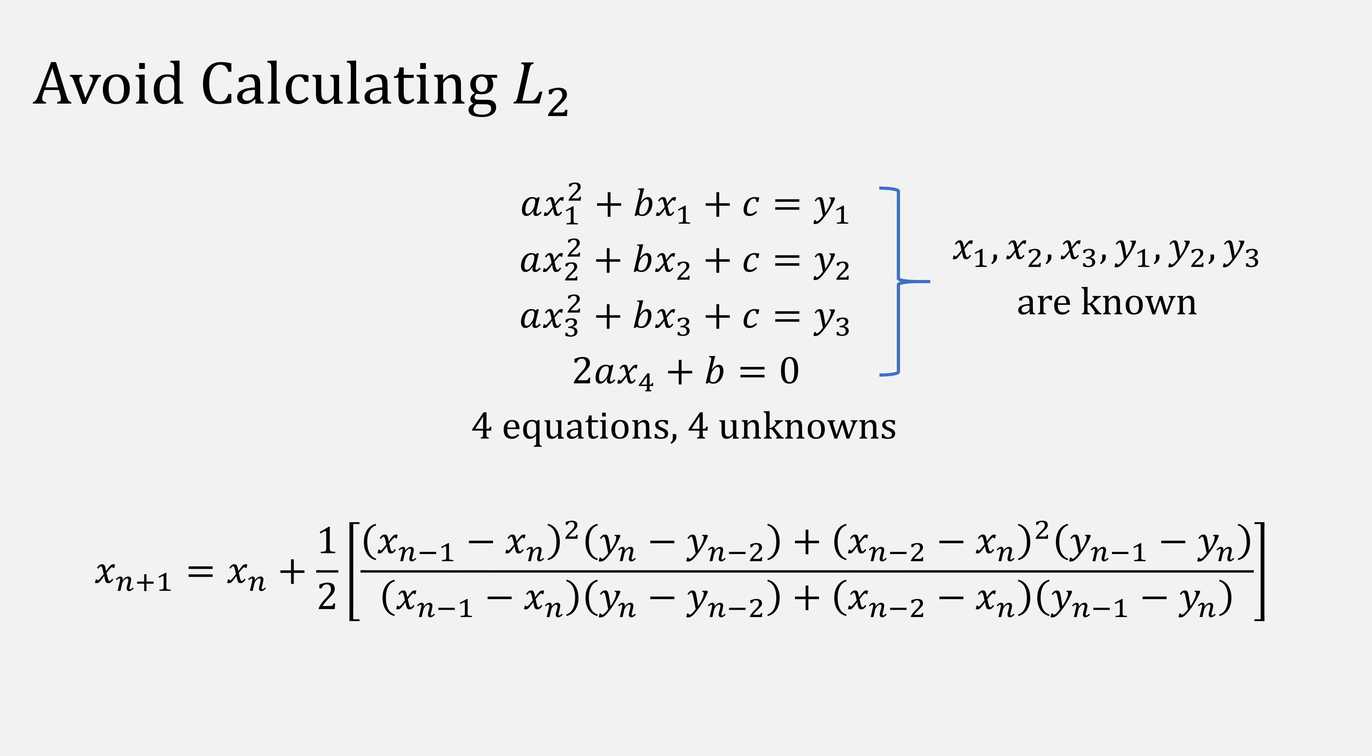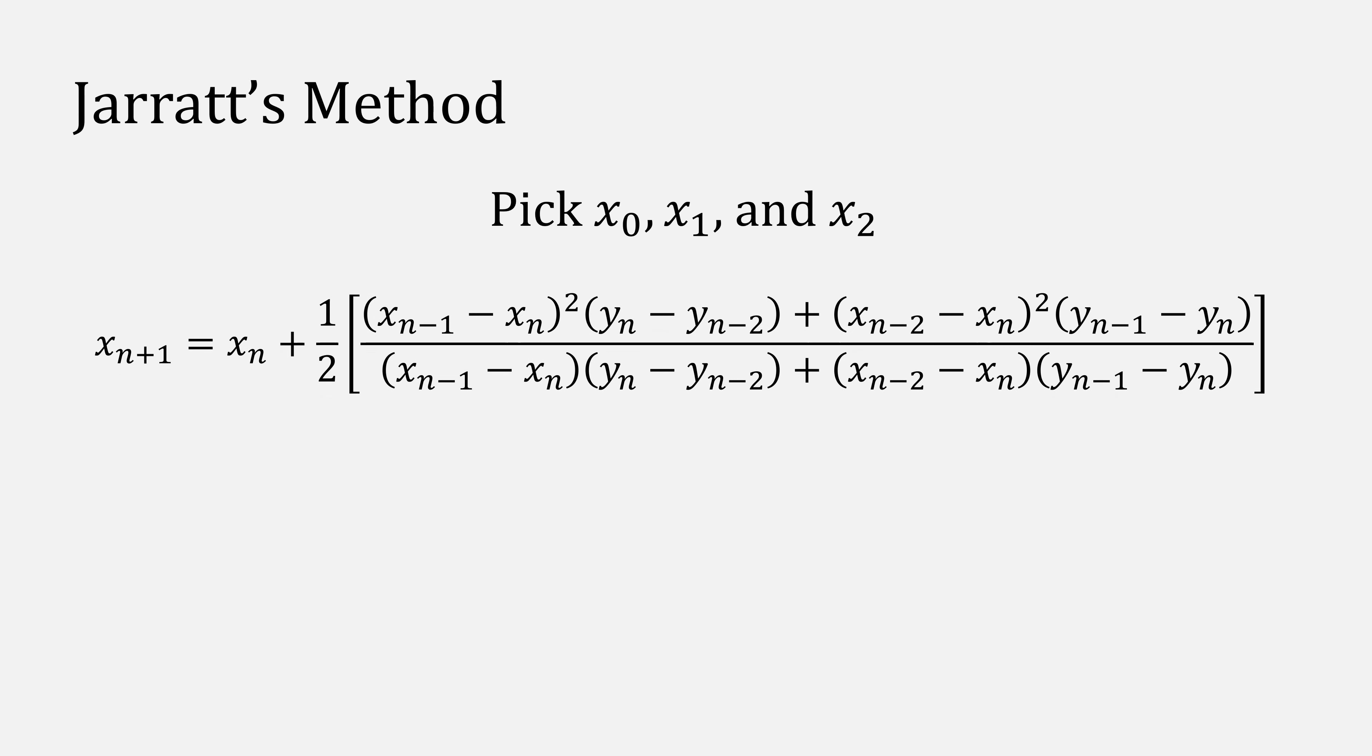More commonly, we will write it like this. We'll stop iterating once our change in x's becomes less than some epsilon in absolute value. Note, as Brent mentioned, this might find a maximum or inflection point, and it also can diverge or divide by zero.